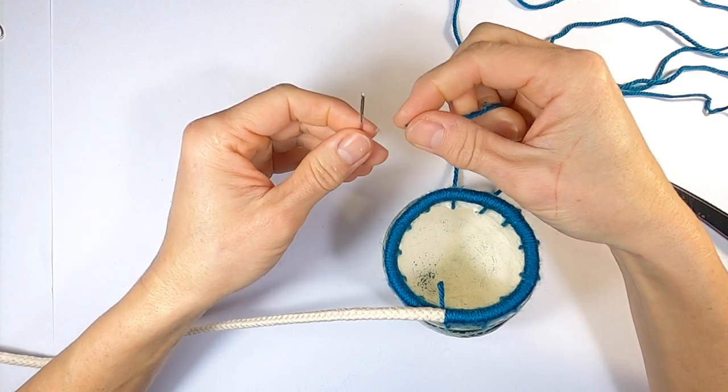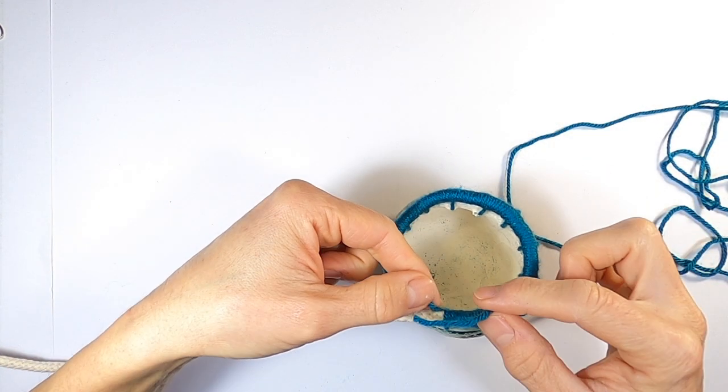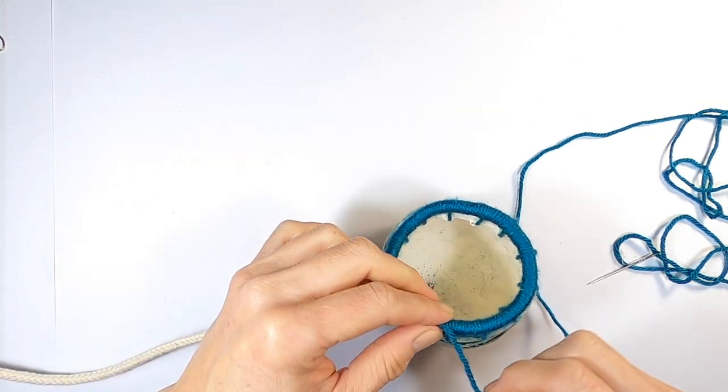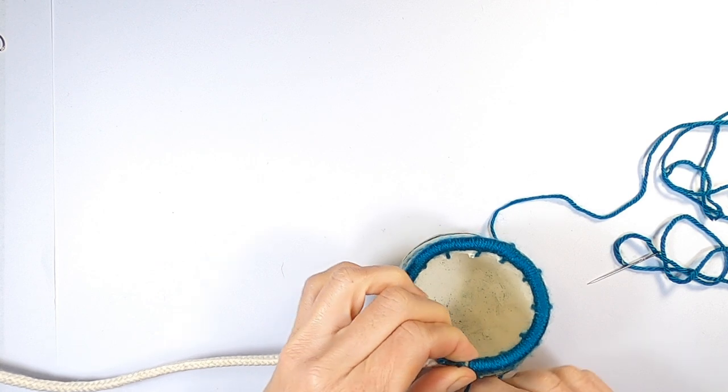When you run out of wool, you can easily attach another piece. Thread up a new length of wool and lay the end over the tail like so, and then wind over the top of the tail of the old wool and continue along as before.